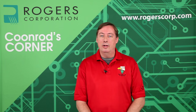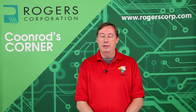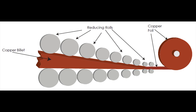The next picture shows rolled copper and how it's manufactured. Rolled copper starts with a large billet of copper that goes through a series of rolling processes to reach the desired thickness. This process yields a copper that has a horizontal grain structure.